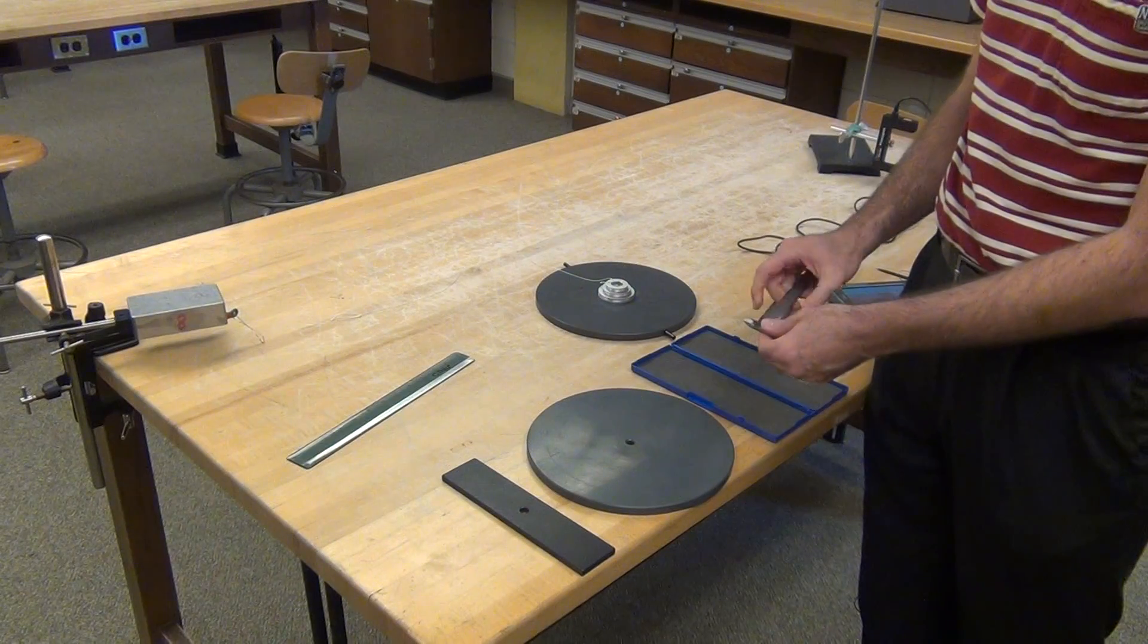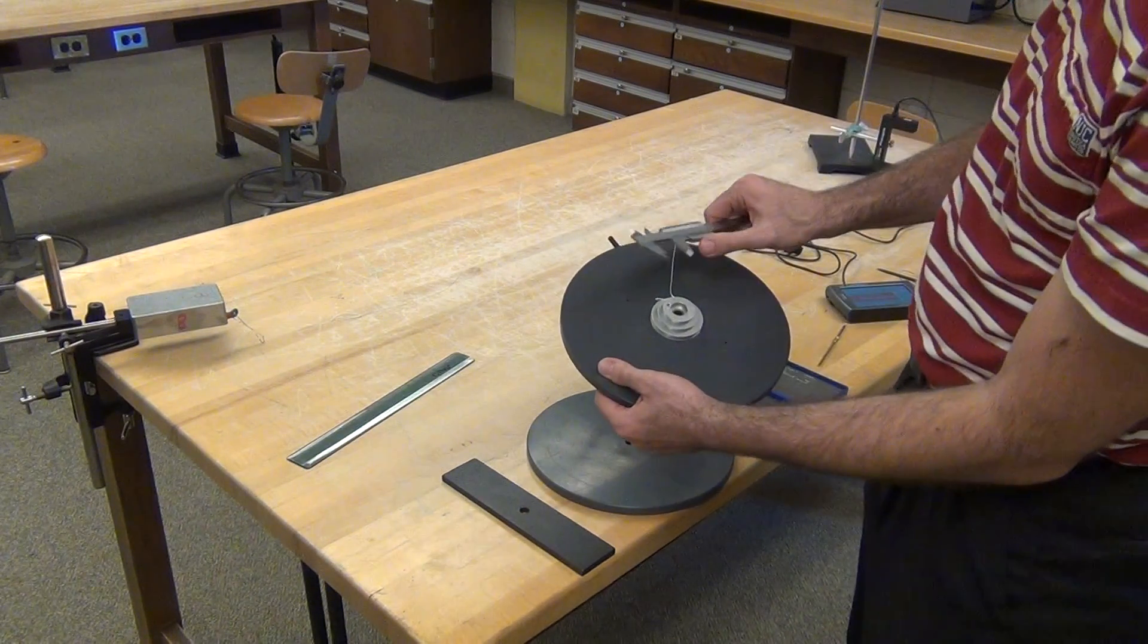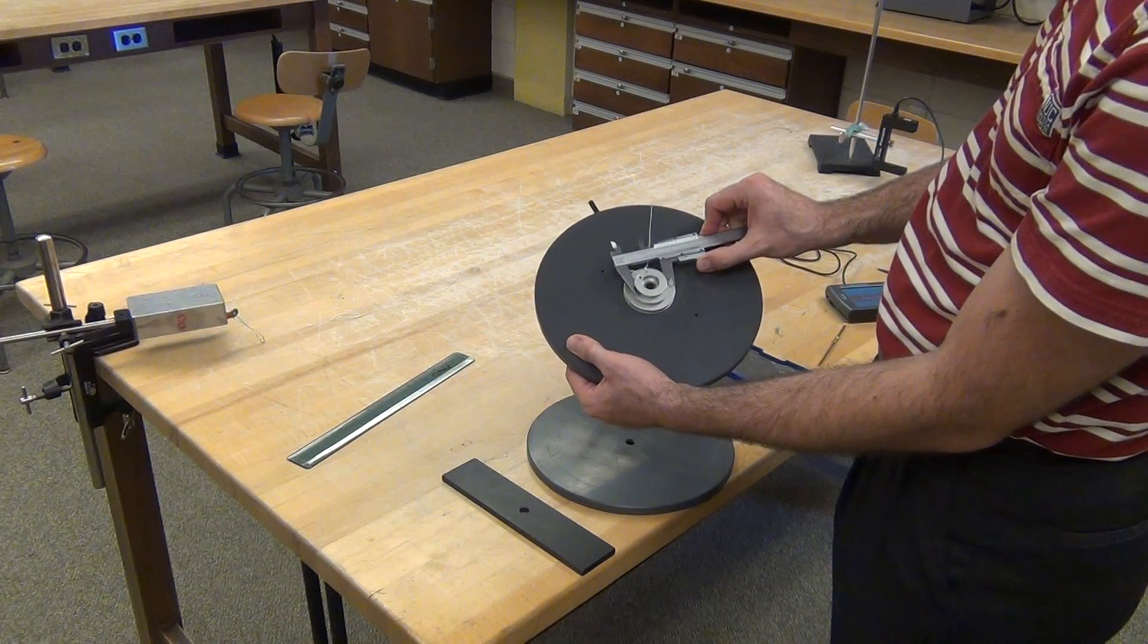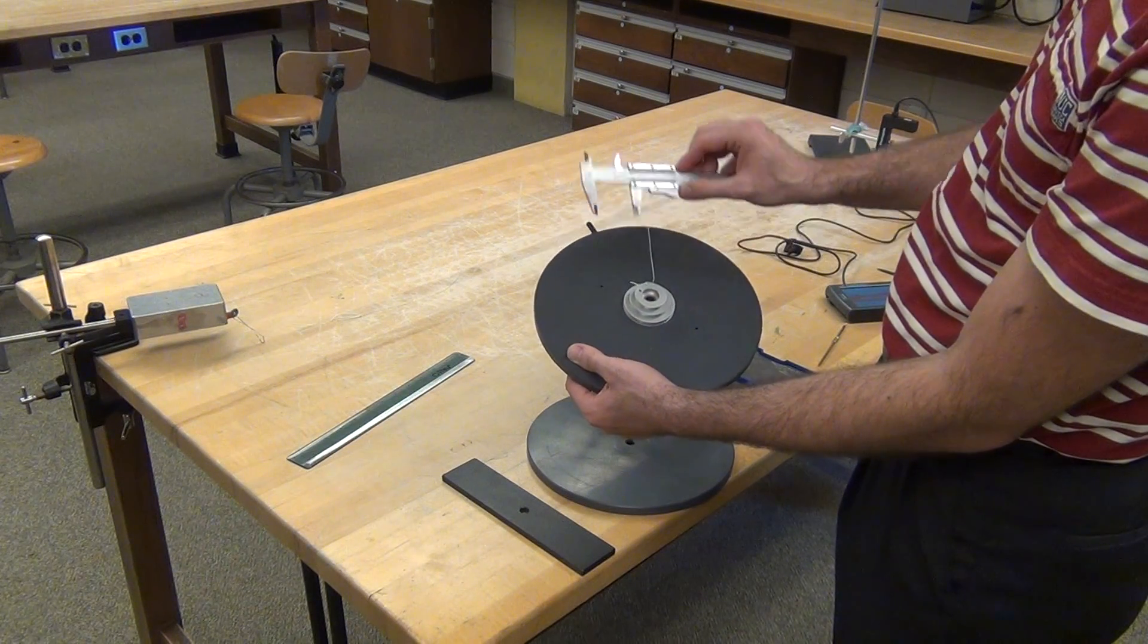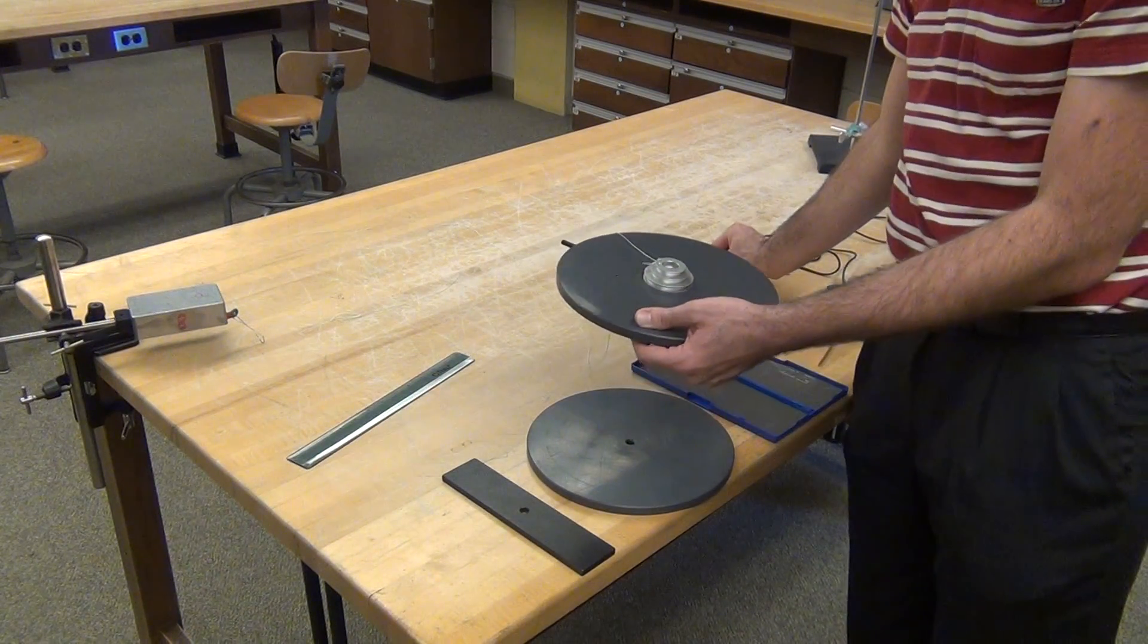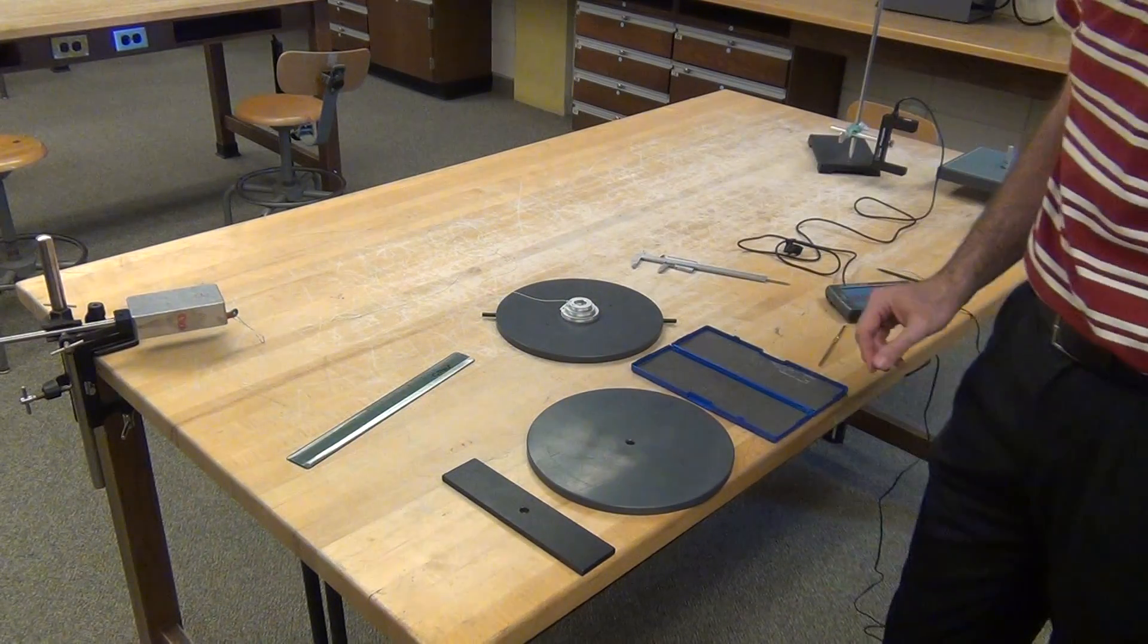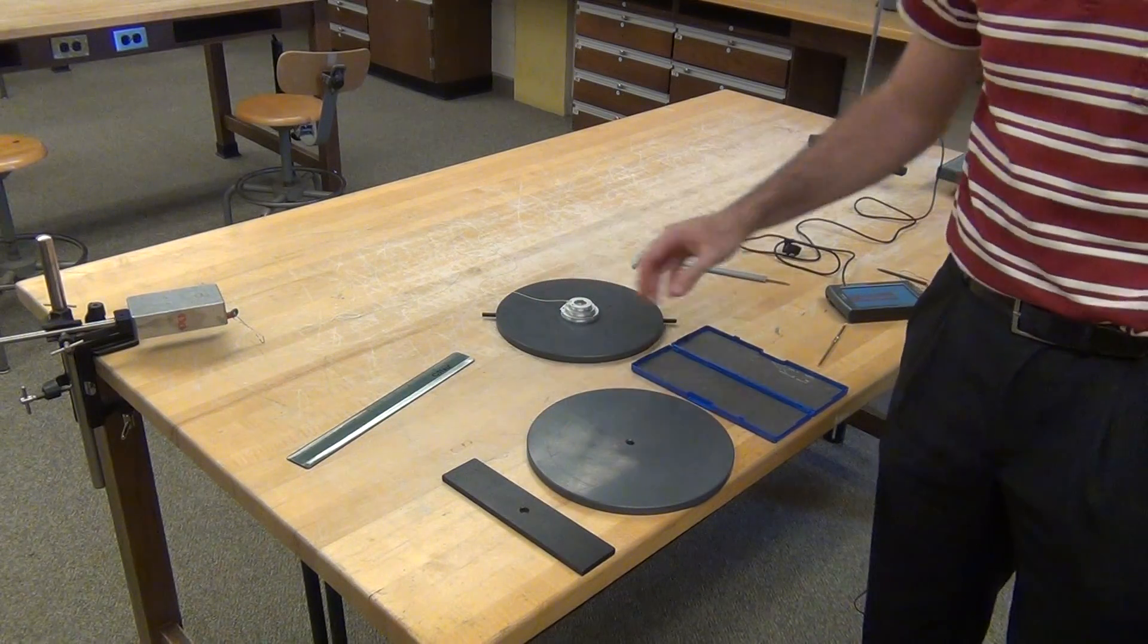We will very accurately measure with a set of Vernier calipers the inner diameter of the small and medium spools that we'll be using. If you're not sure how to use Vernier, look at the other instructional materials on Blackboard and talk to your TA. Once we've measured the mass of these objects and the relevant dimensions...